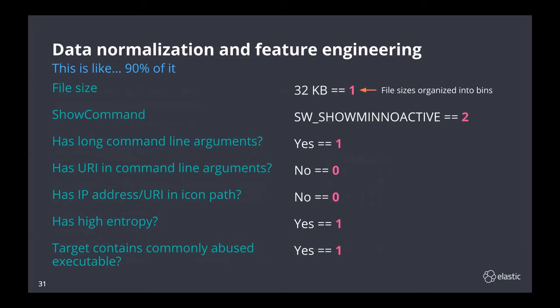We separated file sizes into bins — larger link files would be in a bin with a higher number. For values like the show command, we used the pandas library's factorize function, which gives a numerical representation of those values. For the remaining examples, we created features in a binary true/false, one/zero method by checking each link file for certain values — does a link file have long command line arguments, does it have high entropy, that kind of thing. The end result was a normalized dataset of malicious and benign labeled link files.